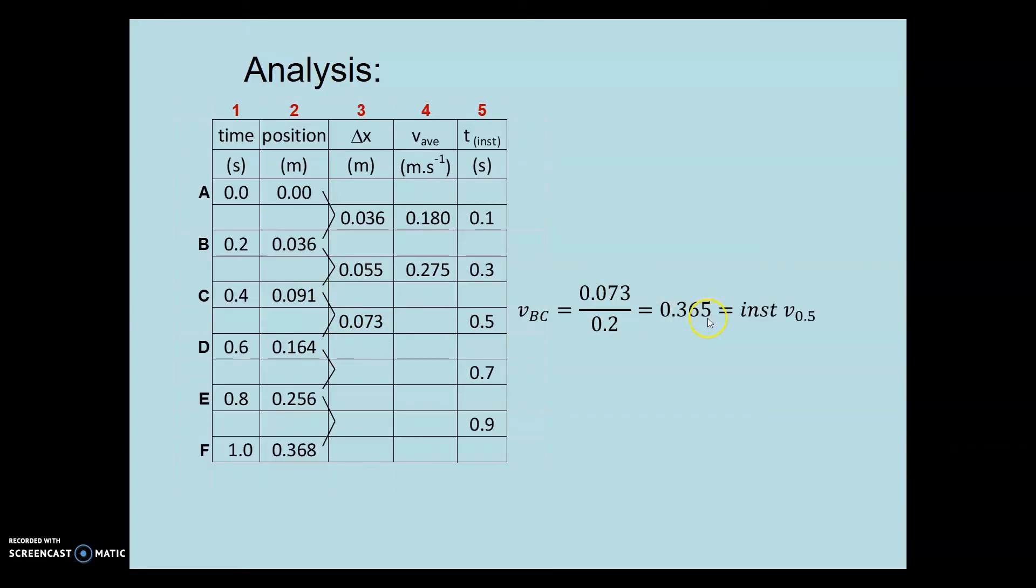And we get 0.365 at an instant of 0.5 seconds. Similarly with the other one, delta x divided by 0.2 gives us 0.46 meters per second at that time.